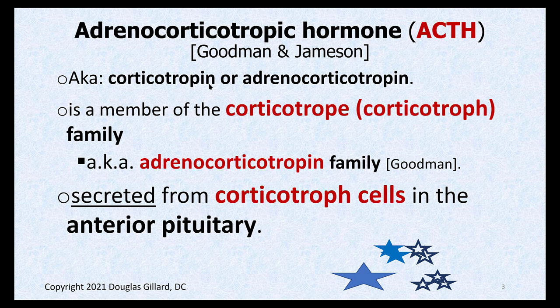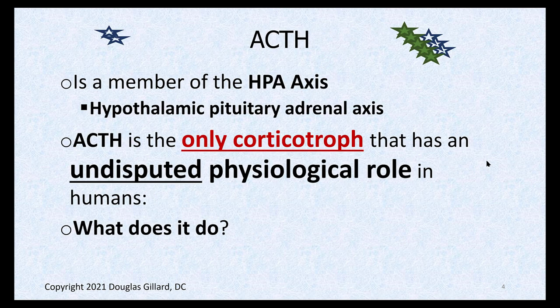Boards discourage the use of 'ACTH' as an abbreviation. It is a member of the corticotroph family, secreted by corticotroph cells which live in the anterior pituitary gland. It is considered a member of the HPA axis — the hypothalamic-pituitary-adrenal axis — and also the HP axis, the hypothalamic-pituitary axis.